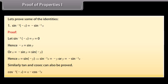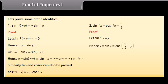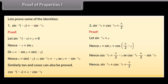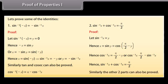Proof that sin⁻¹ x + cos⁻¹ x = π/2: Let sin⁻¹ x = y, so x = sin y = cos(π/2 − y). Hence cos⁻¹ x = π/2 − y = π/2 − sin⁻¹ x. Therefore sin⁻¹ x + cos⁻¹ x = π/2. Similarly, the other two complementary pairs can also be proved.